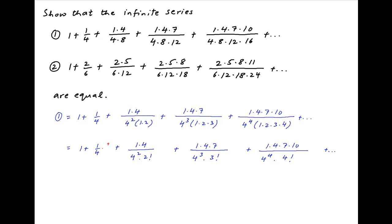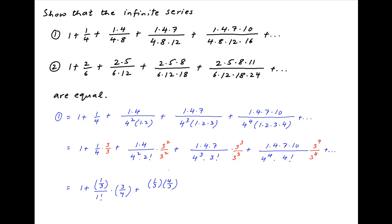Now multiply and divide the second term by 3, multiply and divide the third term by 3 squared, multiply and divide the fourth term by 3 cubed, and so on. This expression can be rearranged as 1 plus 1 plus (1/3) divided by 1 factorial times 3 upon 4, plus...